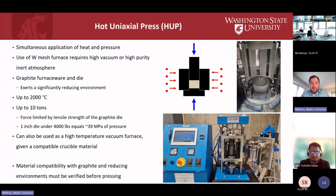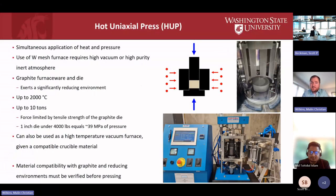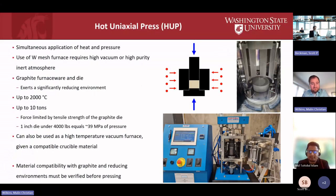The hot uniaxial press we have was purchased under the ARPA-E project I work on, and has been used extensively. It provides simultaneous application of heat and pressure, with a tungsten mesh furnace and all-metallic or graphite hardware. This creates a challenging reducing environment and requires high vacuum or high-purity inert atmospheres to prevent oxidation of the furnace. It goes up to 2000°C and up to 10 tons of force. We've been working at around 4000 pounds, which equals about 39 MPa — a considerable encouragement to densification.